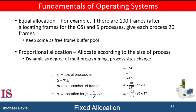The easiest way to split the frames among processes — where the number of frames is m and the number of processes is n — is to give everyone an equal share, that is m divided by n frames. For instance, if there are 93 frames and five processes, each process will get 18 frames. The three leftover frames can be used as a free frame buffer pool. This scheme is called equal allocation.